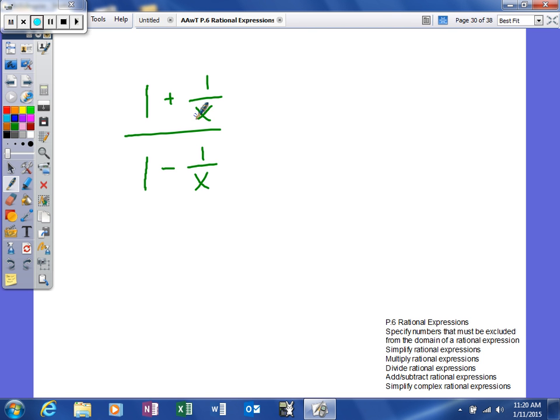To do that, we're going to use our adding and subtracting rational expressions. One is really one over one. We're going to have to get a common denominator. Our common denominator is x, so one times x is x.